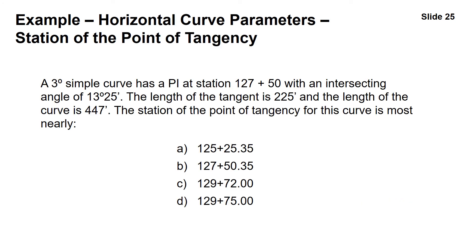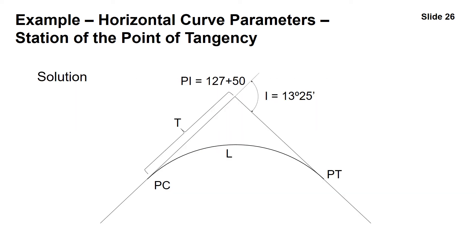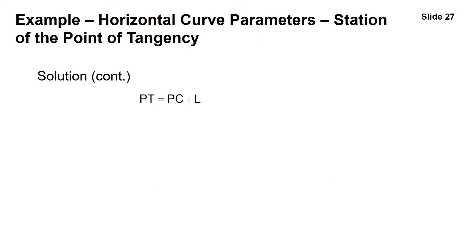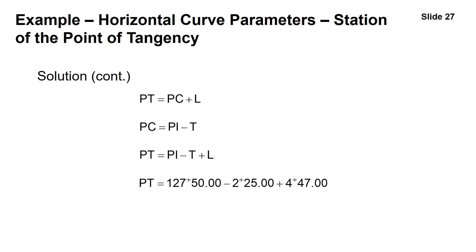To find the PT, we start from the PI, subtract the tangent length T to get the PC, then add the arc length L. So PT equals PI minus T plus L: 127+50 minus 2+25 plus 4+47 gives a PT station of 129+72 — answer C.